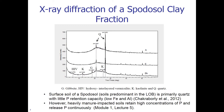Here is the x-ray diffraction pattern of a spodosol clay fraction. The surface horizon of the spodosol — the soils predominant in the Lake Okeechobee Basin — is primarily quartz with little P retention capacity, meaning low iron and aluminum. The three plots are the A, E, and BH horizons. The BH horizon is different; it contains materials such as gibbsite, hydroxy interlayered vermiculite, kaolinite, and quartz. However, heavily manure-impacted soils are able to retain high concentrations of P and release P continuously — that is the key difference between inorganic P and manure-impacted P.